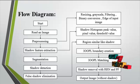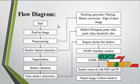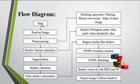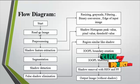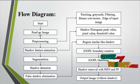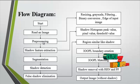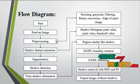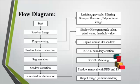Now we discuss the flow diagram. First, the process starts and an image is obtained from the dataset. The dataset image is read in MATLAB, and then preprocessing is carried out. In preprocessing, the image is resized to an optimum size and grayscale conversion is applied if needed.